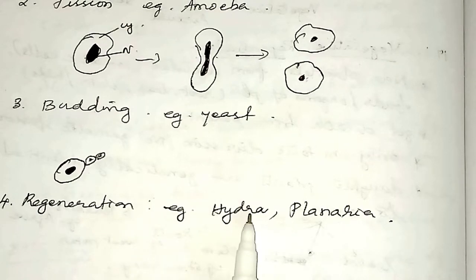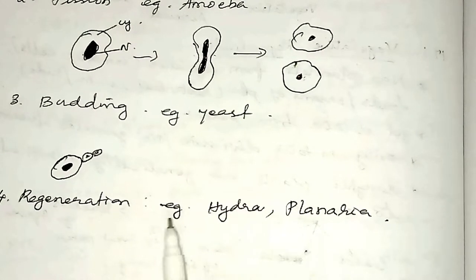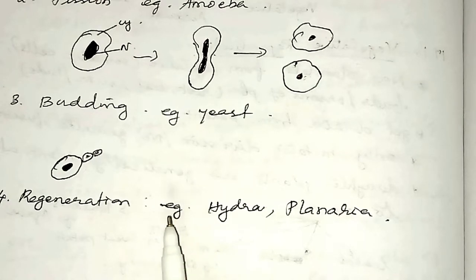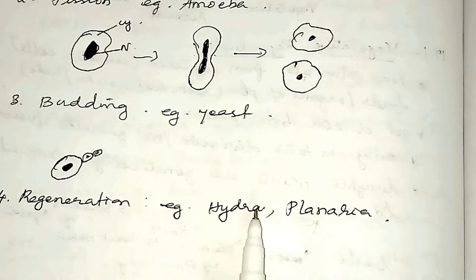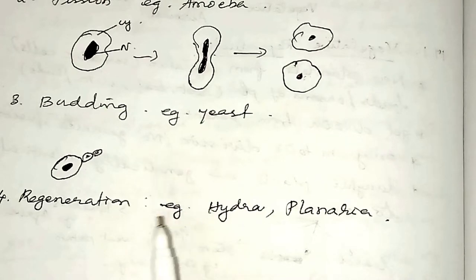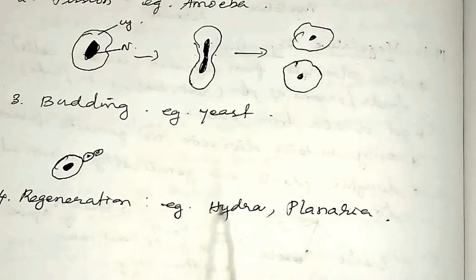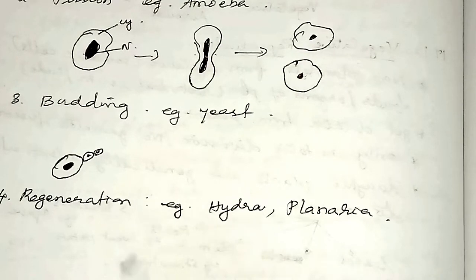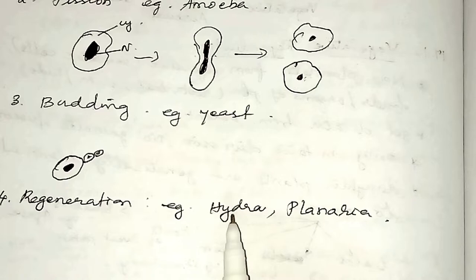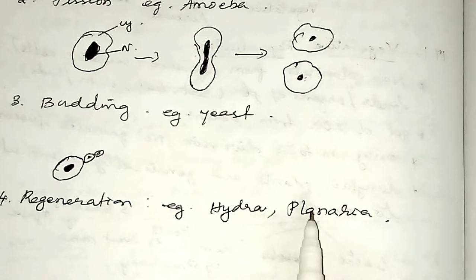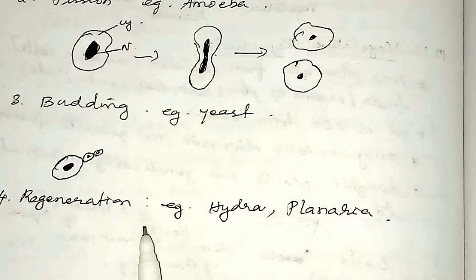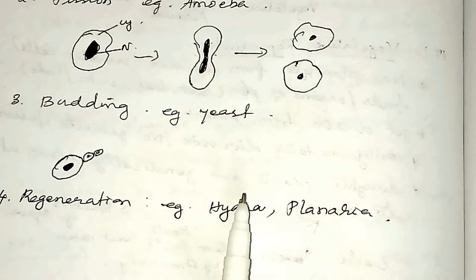This next type is called regeneration. Example: hydra and planaria. In these organisms, if they lose their body parts, the parts can be newly grown back completely. The ability of the lost parts of these individual organisms to give rise to a whole new organism is called regeneration. This takes place by the replacement of a specialized mass of cells in hydra and planaria.